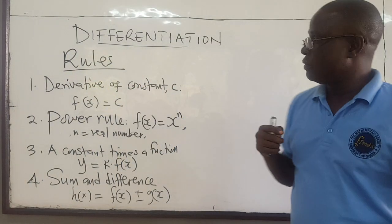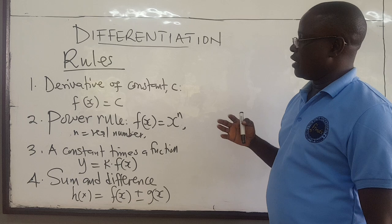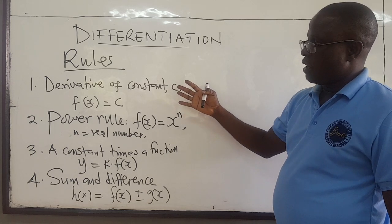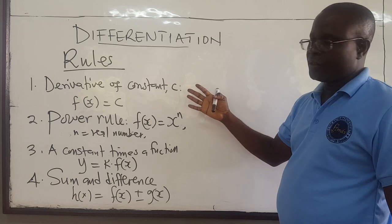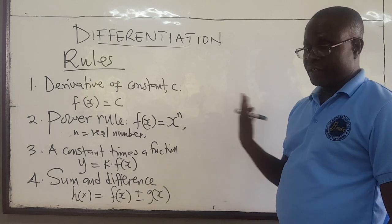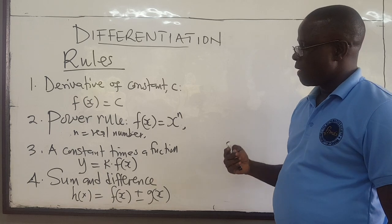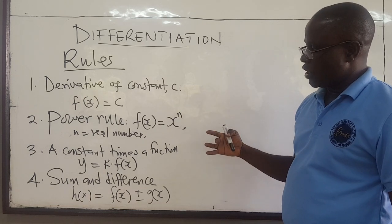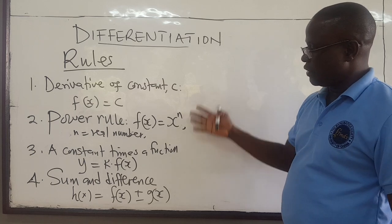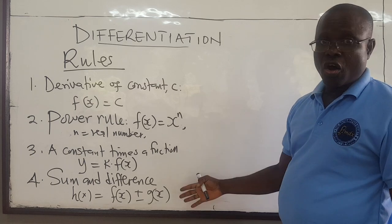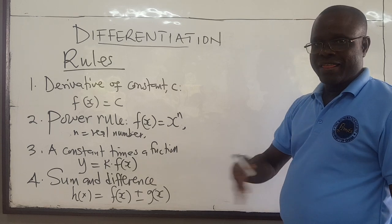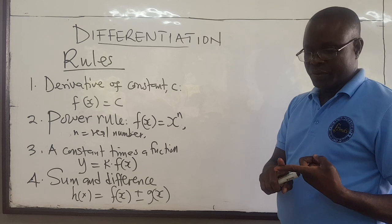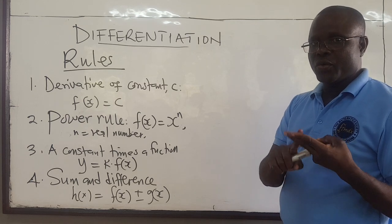Here we want to start looking at the derivative of functions. In the last lecture, we looked at how to find the derivative of a function from first principles. But there are rules that will help us find a derivative without using first principles. We're going to discuss these, and then later we'll look at two important ones: the product rule and the quotient rule.